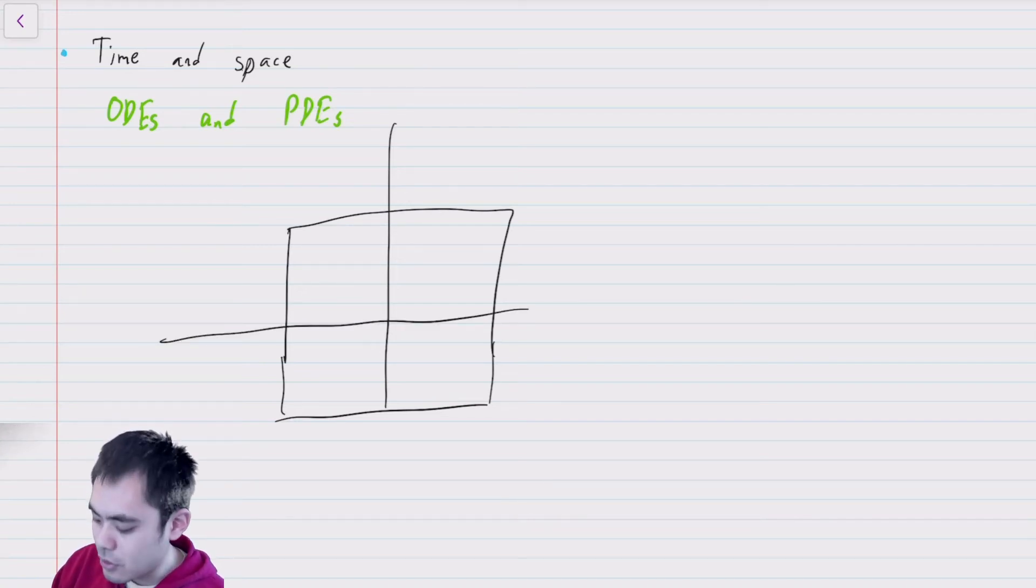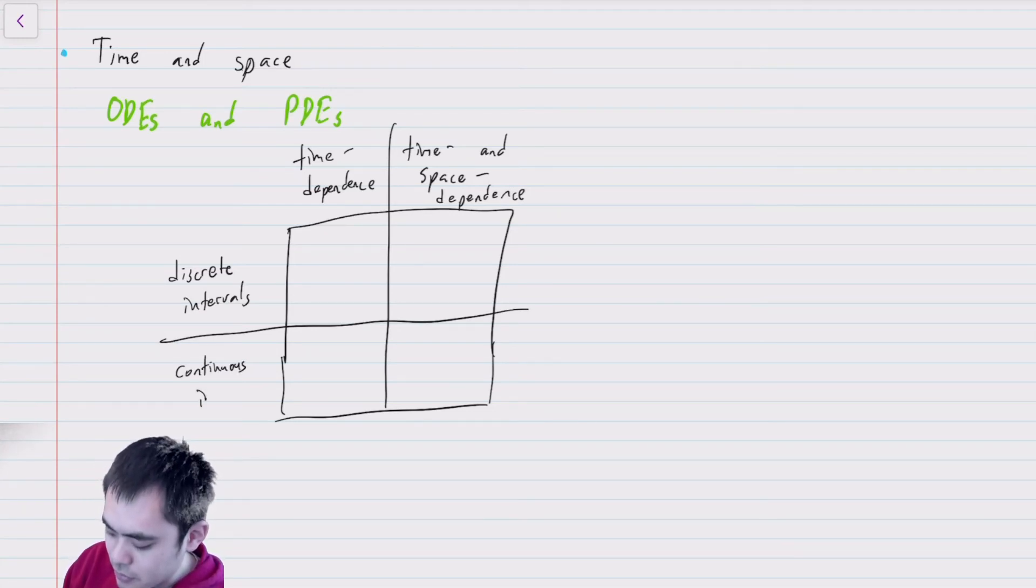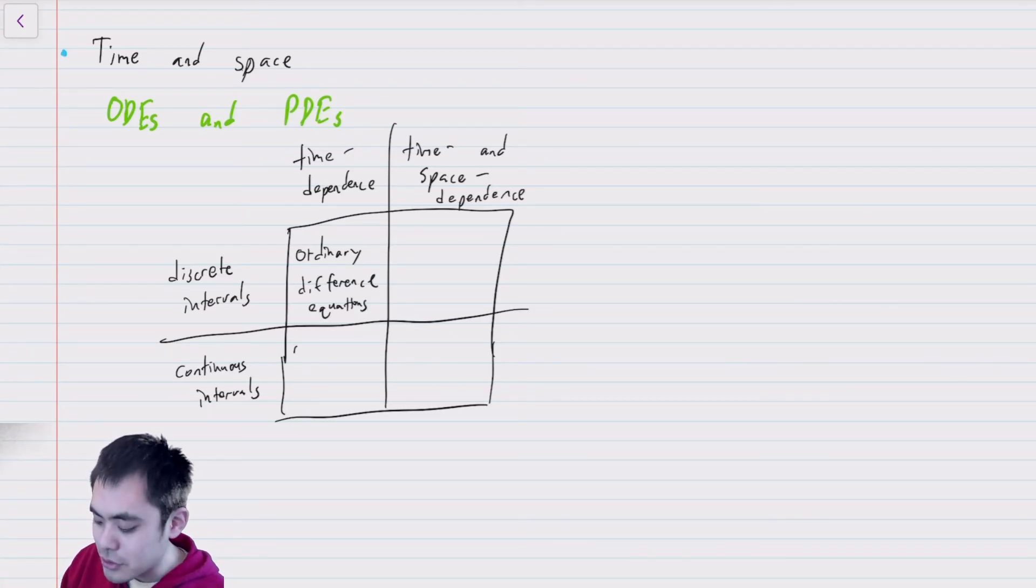So we have, up here, we have time dependence. If our dynamical variables only have time dependence, versus if they have time and space dependence. And here, if everything is in discrete intervals, like the generation times of cicadas, versus continuous intervals. Now, in this case, if we're using discrete intervals and we only have a time dependence, then all we need is ordinary difference equations. And if we have continuous intervals, these are just ordinary differential equations like you would have studied in previous courses.